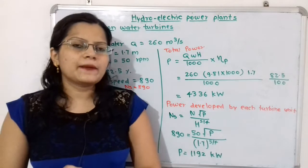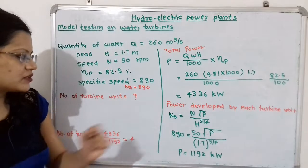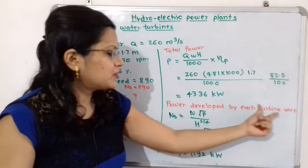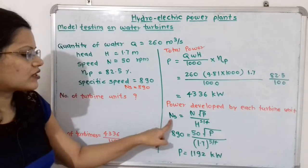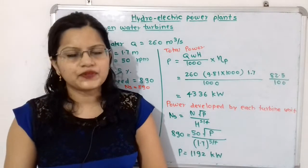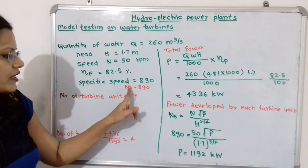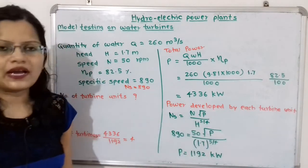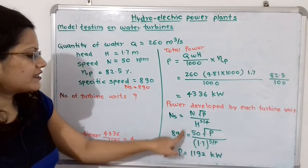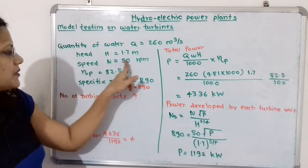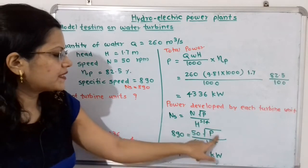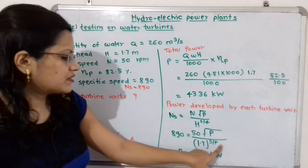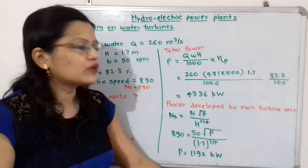Now we calculate the power developed by each turbine unit using the specific speed formula. Specific speed N_S = N × √P / H^(5/4). Substituting: 890 = 50 × √P / 1.7^(5/4). Solving for P, the power developed by each turbine unit is 1192 kilowatts.